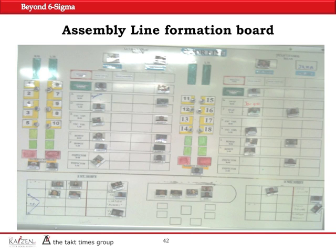Assembly line formation board — this is a magnetic board with different positions on the assembly line. The photos of team members are attached to the board showing their position. Team leaders organize their respective lines so team members know what position they will work at based on their skill level. When they're supposed to be rotated — we were rotating people every two hours — they know that after two hours they will go to another process or operation. It's another example of visual management of the assembly line.